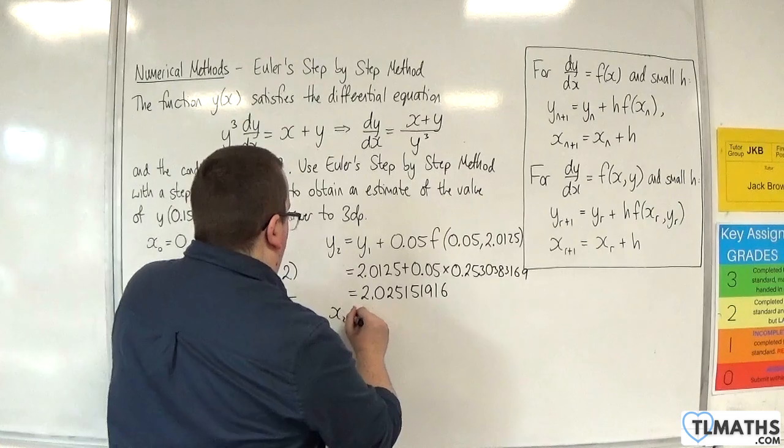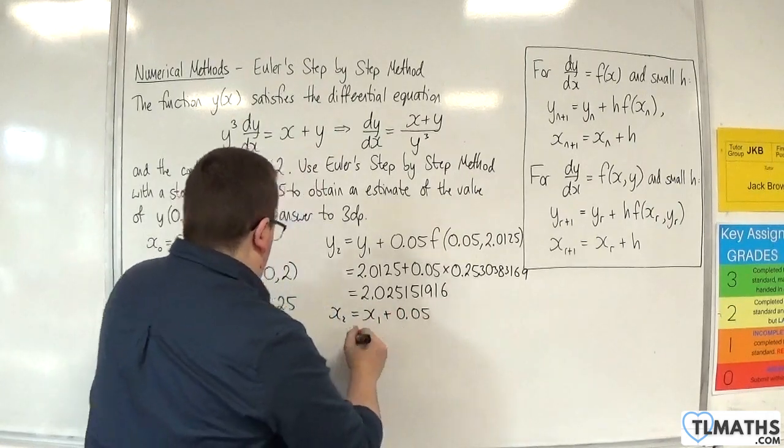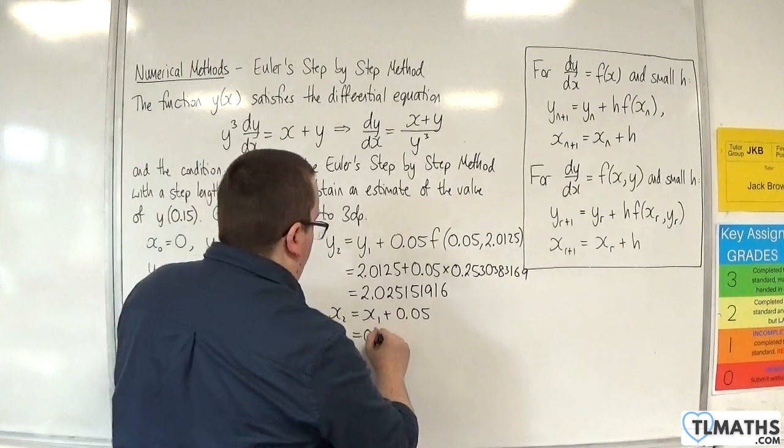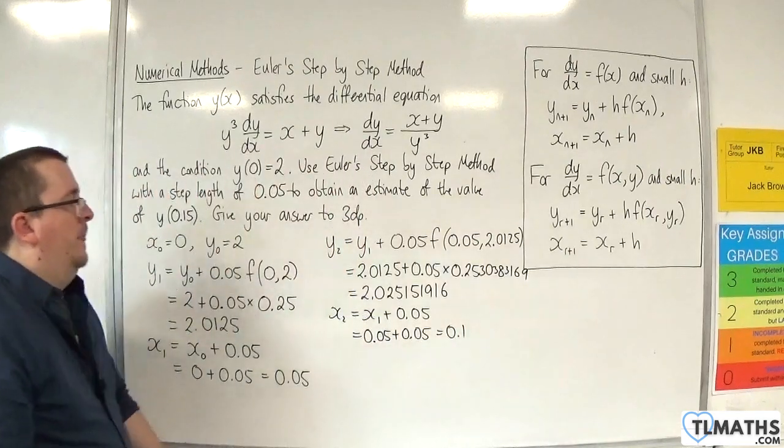Okay, so x₂ will be x₁ plus the step length. So x₁ was 0.05 plus 0.05 equals 0.1.